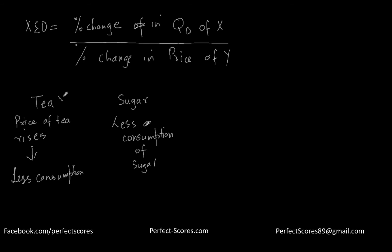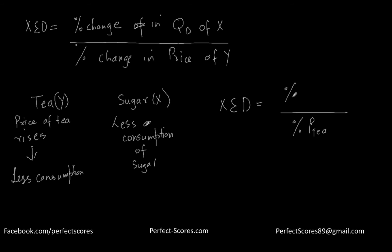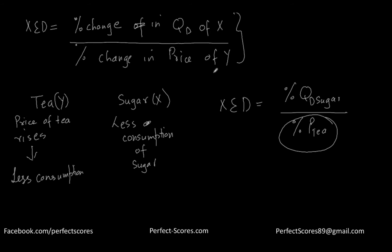So if tea is product Y and sugar is product X, the cross price elasticity captures the percentage change in the price of tea relative to the percentage change in quantity demanded for sugar. There was an effect of the change in the price of tea on the demand for sugar — this is what we call the cross price elasticity of demand.